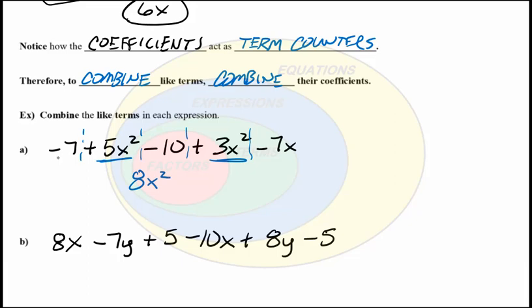I have negative 7 and negative 10. These are constants. And of course, I can combine those together to get negative 17.